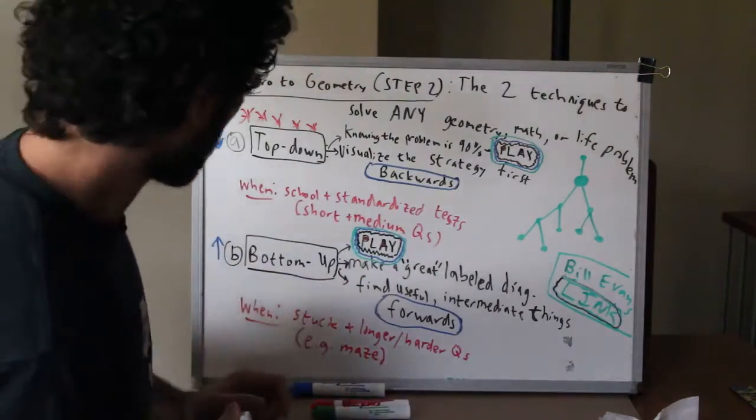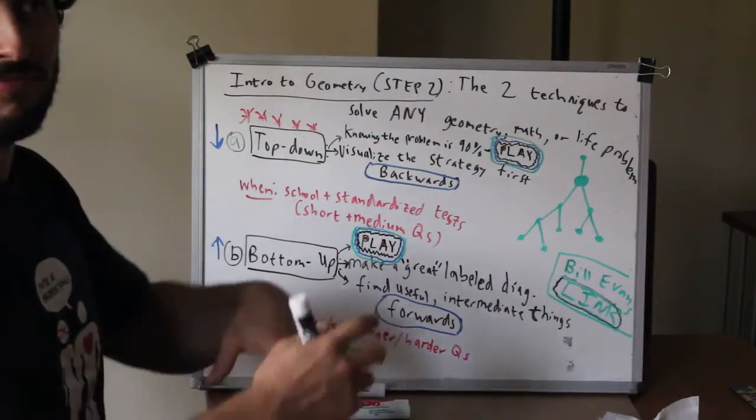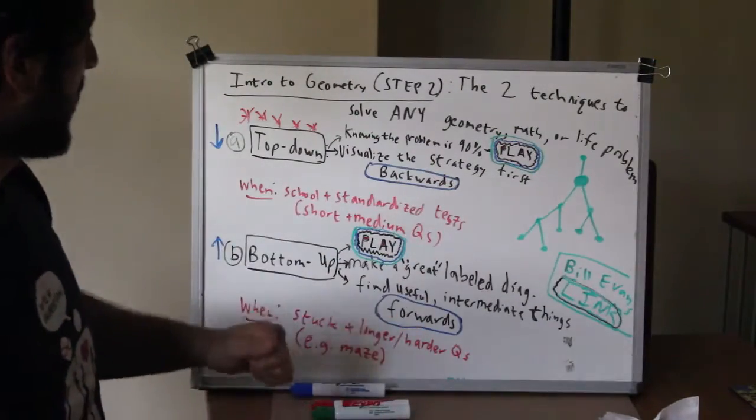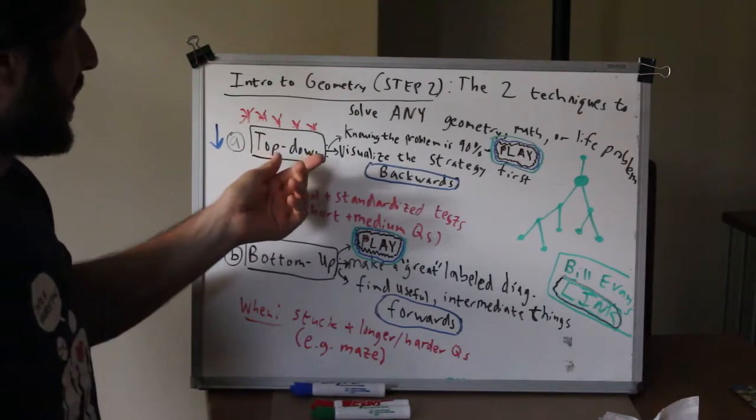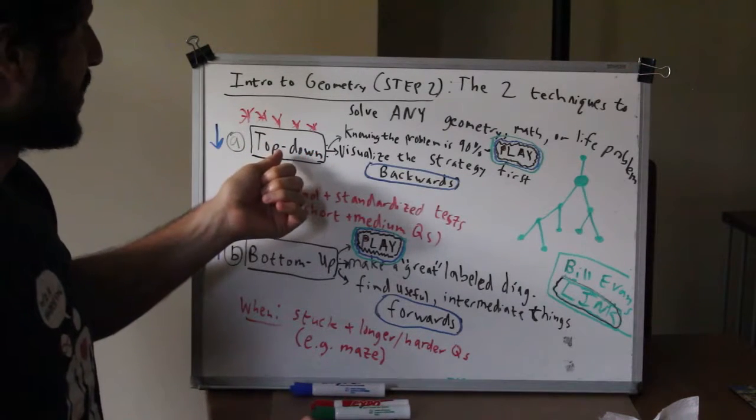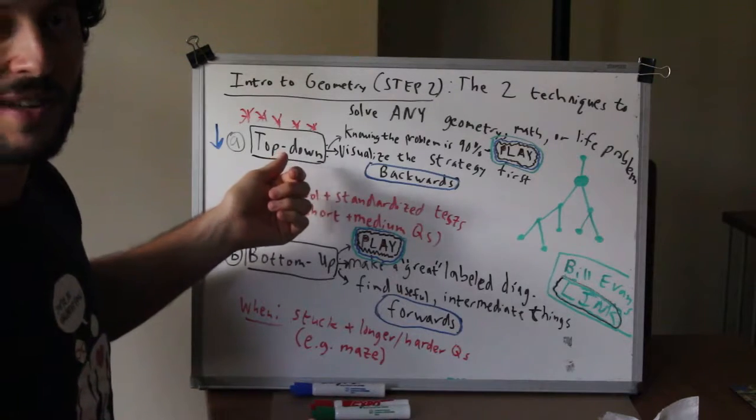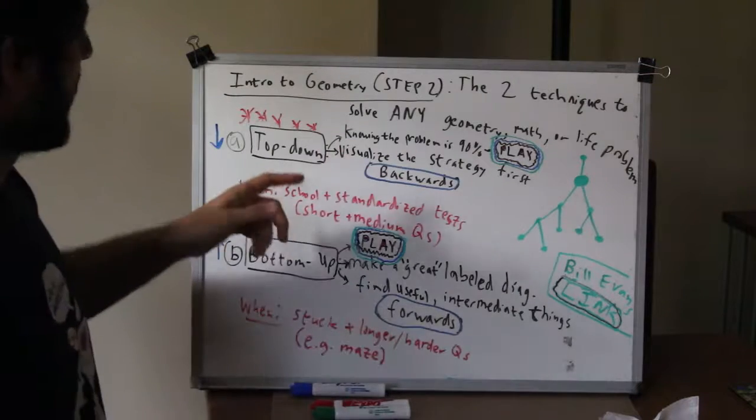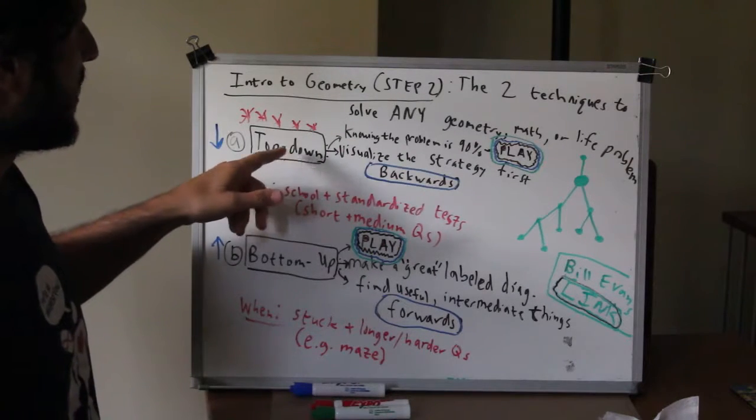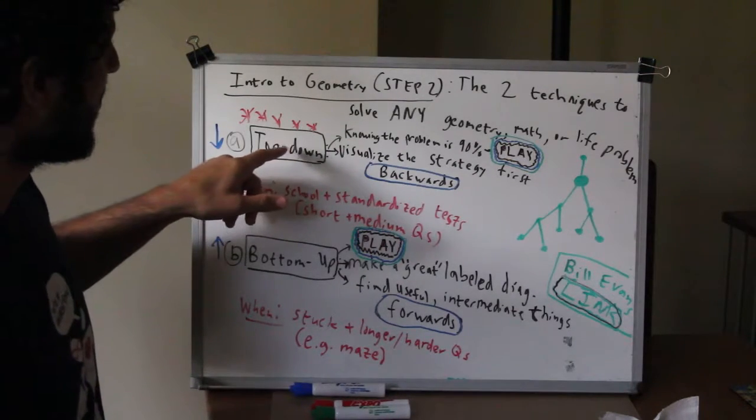Here's the idea: if you have some sort of intricate geometry problem, your first approach is the top-down. In other words, what you want to do is figure out what you want to find. So let's say you want to find the radius of a circle and you're given its area.